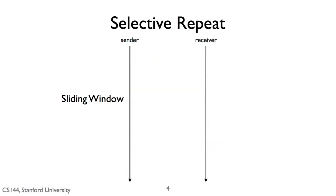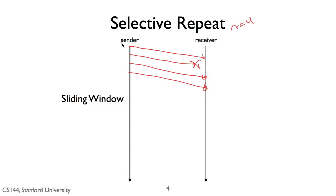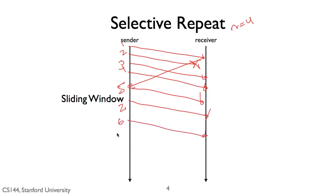Now let's see what a selective repeat protocol will do. Again, n equals four. We transmit one, two, three, four, and packet two is lost. Packet one is acknowledged, which lets us send five. In a selective repeat protocol, the transmitter is going to retransmit two, and then will continue execution and transmit six, seven, eight, nine, and so on. So it retransmits only the packets that were not acknowledged.